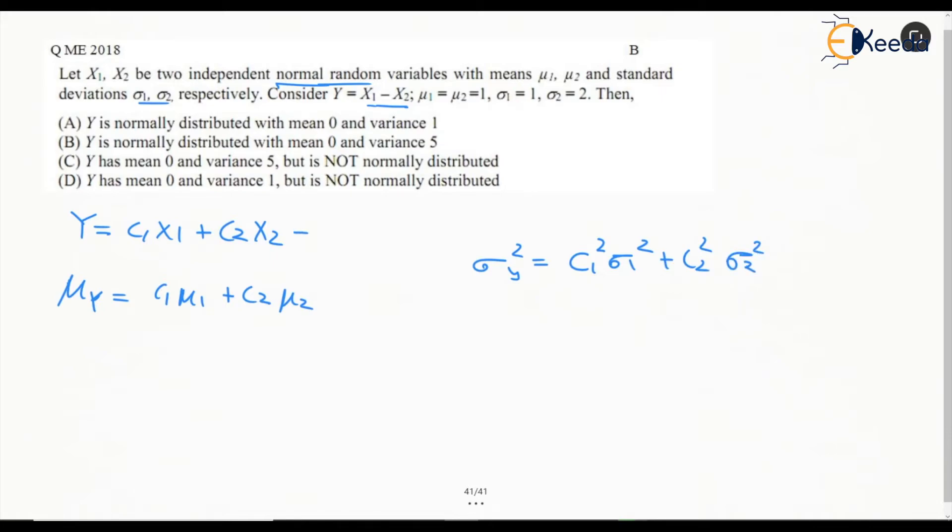This Y is given as X1 minus X2, which means c1 is 1 and c2 is minus 1. So the mean is mu1 minus mu2. Since c1 is 1, mu1 is 1, c2 is minus 1, and mu2 is 1, this is going to be 0.